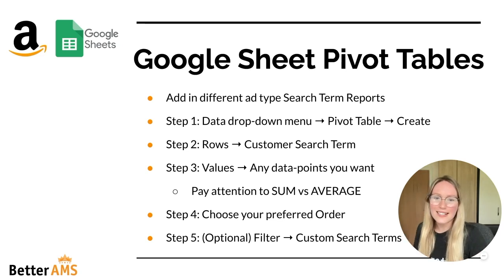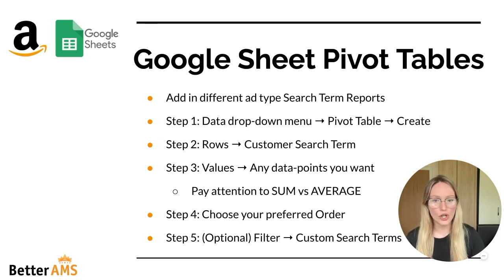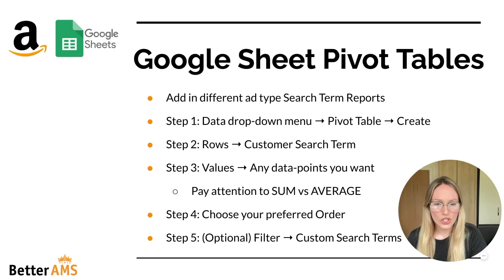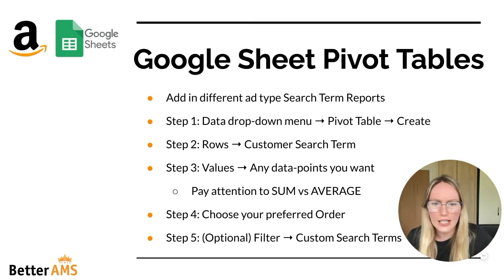Really quickly, here's a recap of all the key steps. Step one: click on the Data dropdown menu, select pivot table, then create. Step two: go to rows and add the customer search term. Step three: click on values and add in any data points you want combined — impressions, clicks, cost per click, whatever — but pay close attention to sum versus average. Step four: choose your preferred order by going back up to the rows feature. Step five, optional: filter the data — whether that's branded search terms, competitor names, or search terms that have over 10 clicks — you'll find that in the filter.